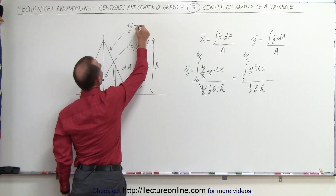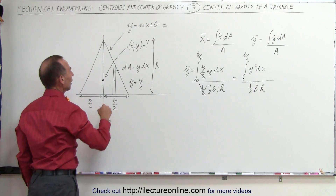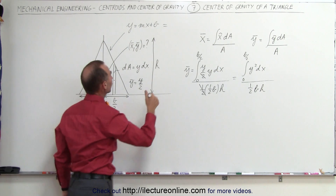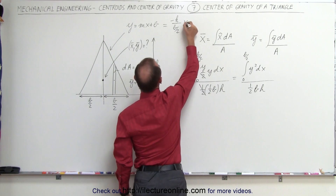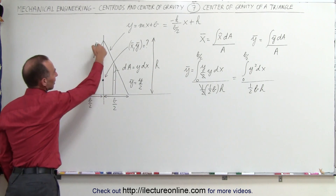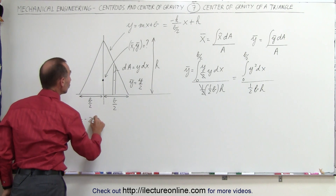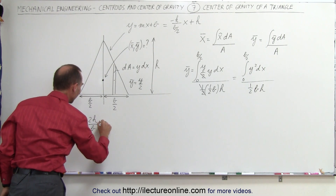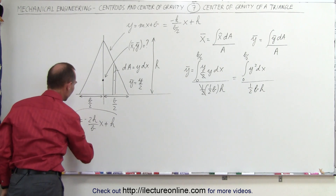This line is in the format y = mx + b. The slope is the rise over the run — in this case a drop of h over a run of b/2, so it's minus h divided by (b/2) times x, plus the y-intercept which is h. So the equation for that line is y equals minus 2h over b times x plus h.